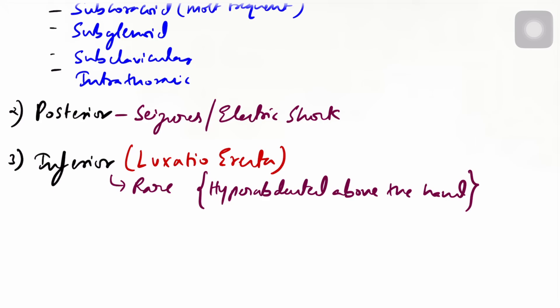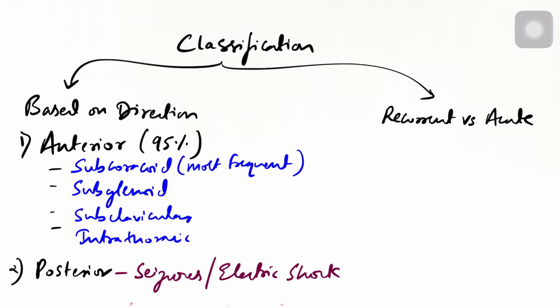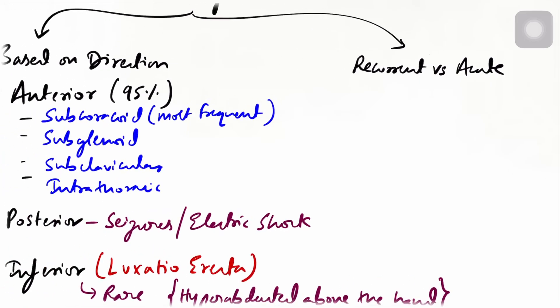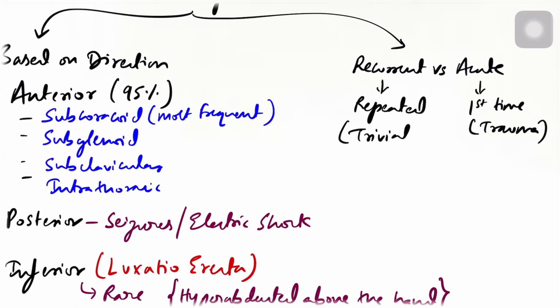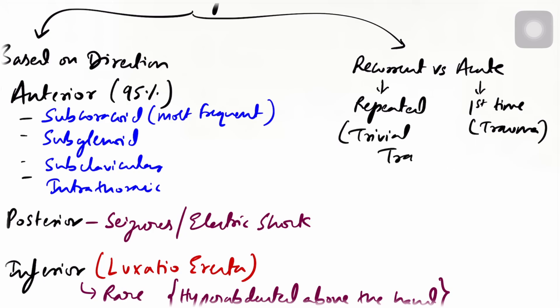The second classification is recurrent versus acute. Acute refers to a first-time dislocation due to trauma, while recurrent refers to repeated dislocations caused by trivial trauma.